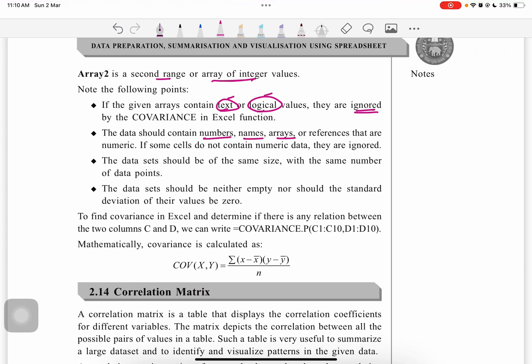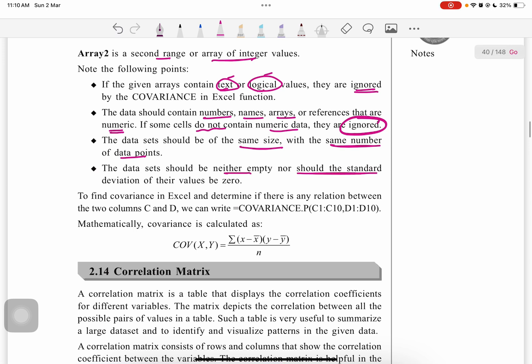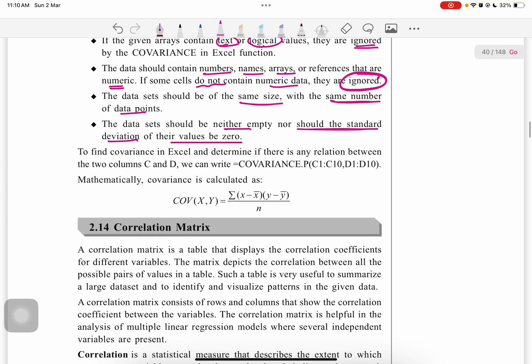If some cells do not contain numeric data, they are ignored. Data sets should be of the same size with the same number of data points. Data sets should be neither empty, nor should the standard deviation of the values be zero.